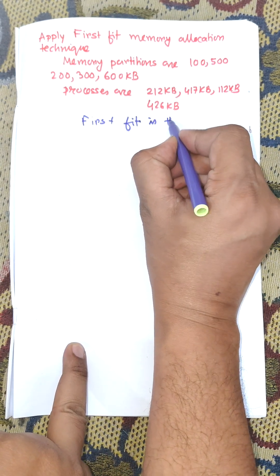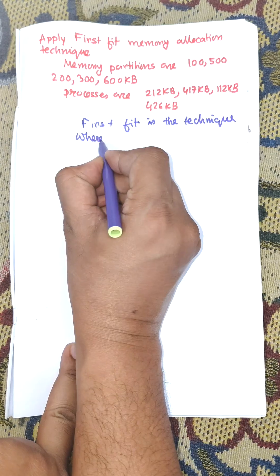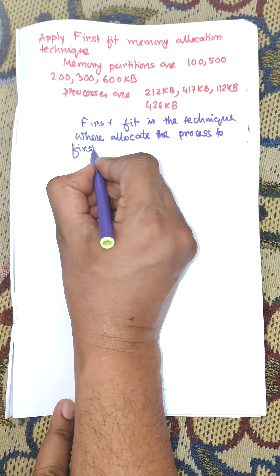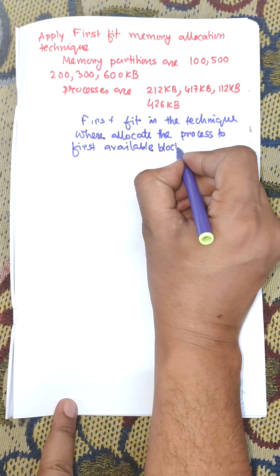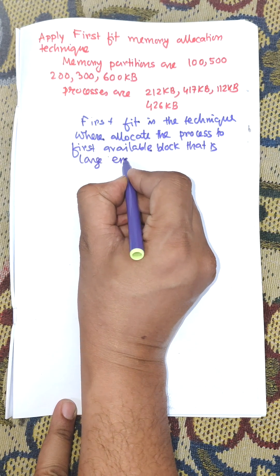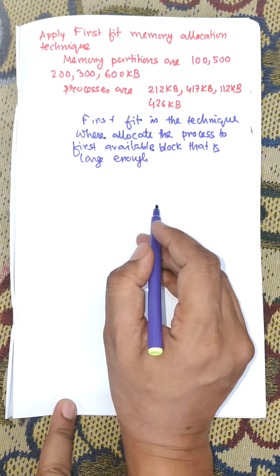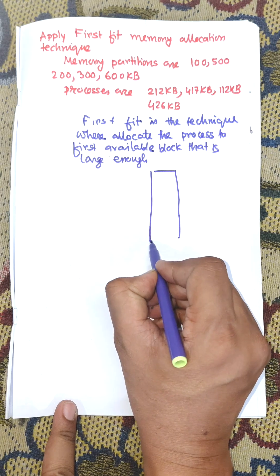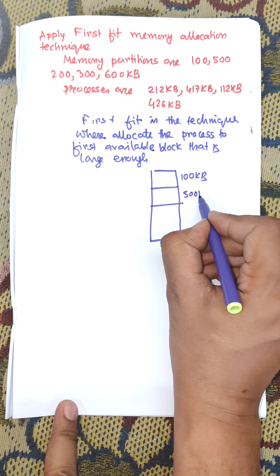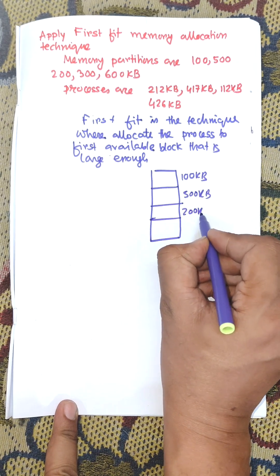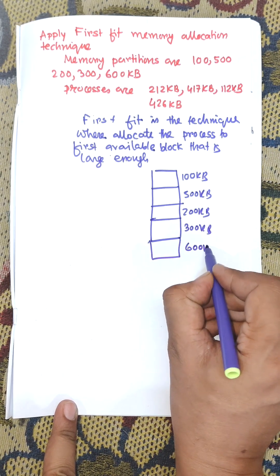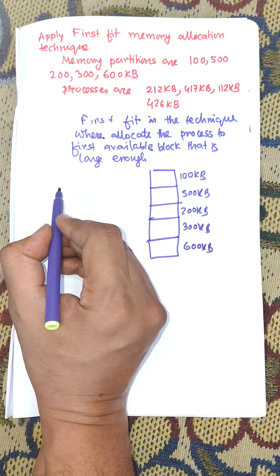The first fit technique allocates a process to the first available block that is large enough. Here we draw the memory partitions: the first memory partition is 100 KB, next is 300 KB, then 500 KB, 200 KB, 300 KB, and 600 KB.